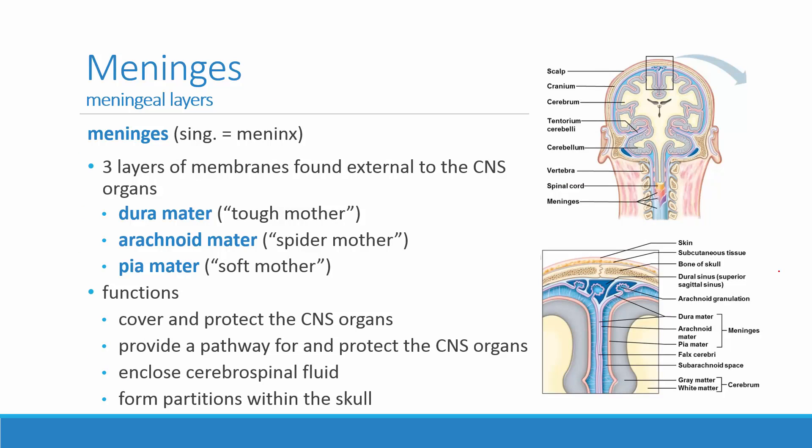Let's focus on the meningeal layers — the meninges. A single layer is called a meninx, and together they are the meninges. There are three layers of connective tissue membranes found external to the CNS organs. The most superficial layer is the dura mater — 'dura' like durable means tough, and 'mater' means mother, so this is the tough mother. Hopefully you got a chance to see just how very thick and strong this layer of connective tissue is.